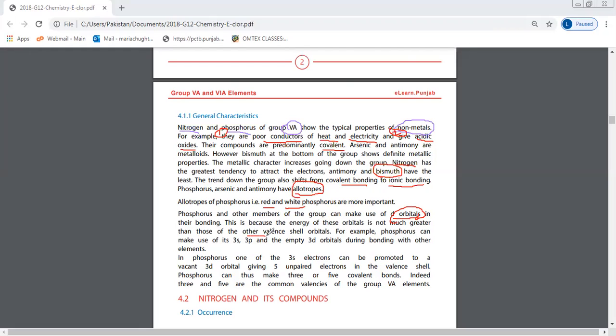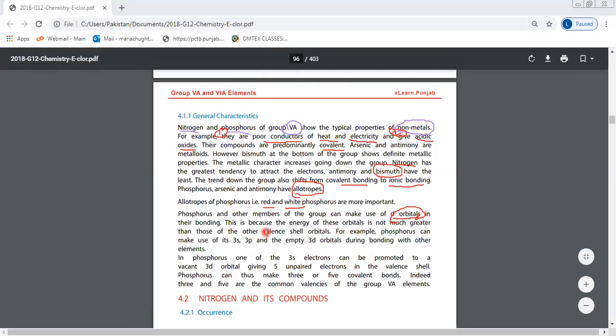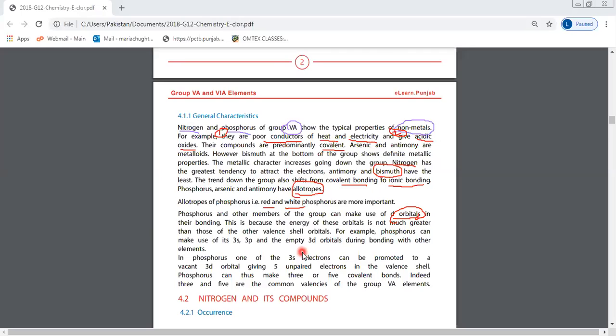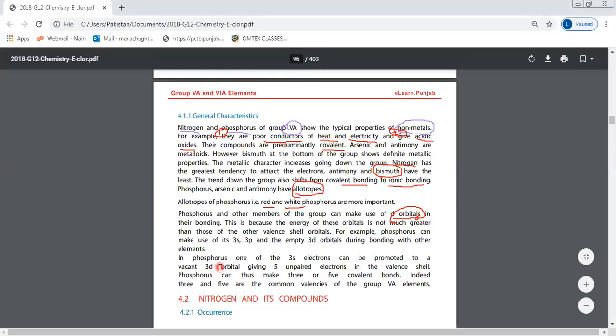Phosphorus and other members of the group can make use of d-orbitals. This is because the energy of these orbitals is not much greater than those of other valence orbitals. Only nitrogen cannot use d-orbitals because nitrogen is a small element. Other elements like phosphorus can use d-orbitals.